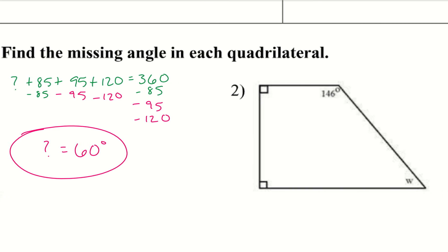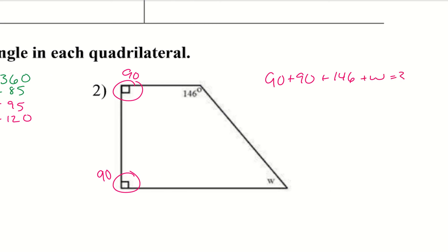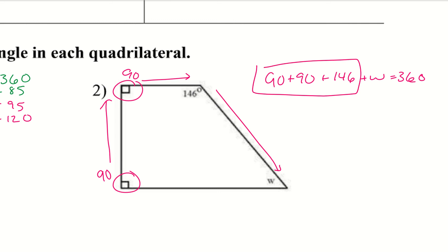Remember, these little square symbols on the corners indicate 90 degrees. So that means 90 plus 90 plus 146 plus W equals 360. It doesn't matter what order you add them in. If I take 90, 90, and 146 and subtract all of that from 360, I end up with W equals 34 degrees.